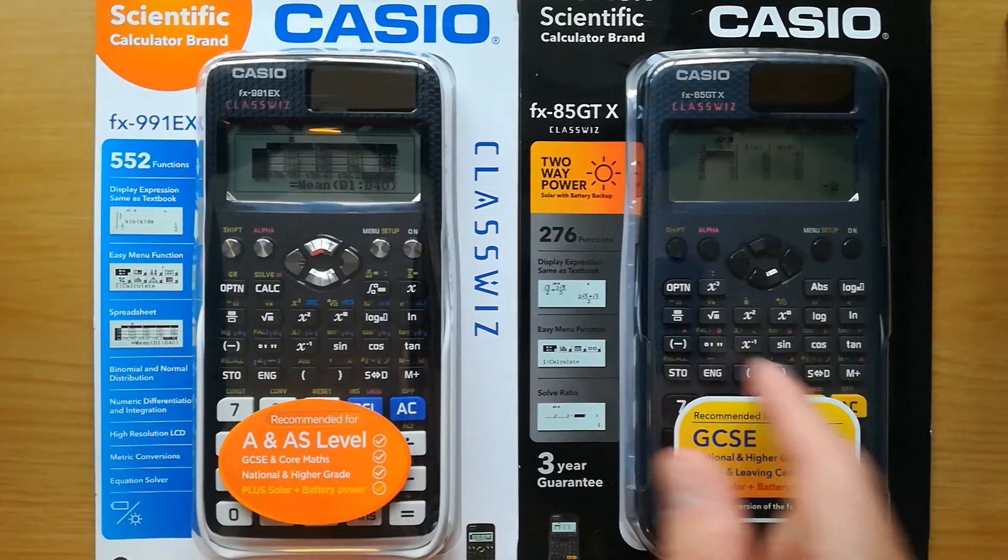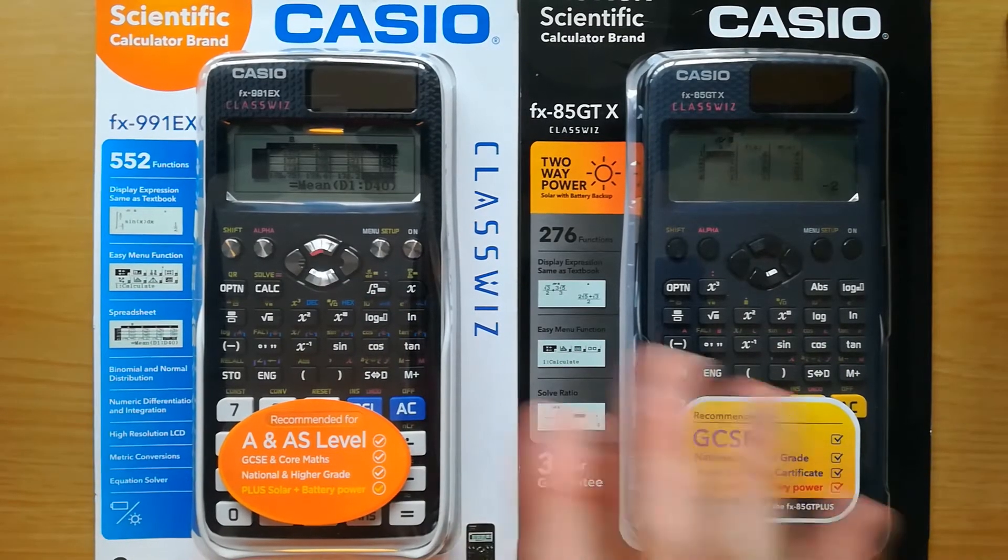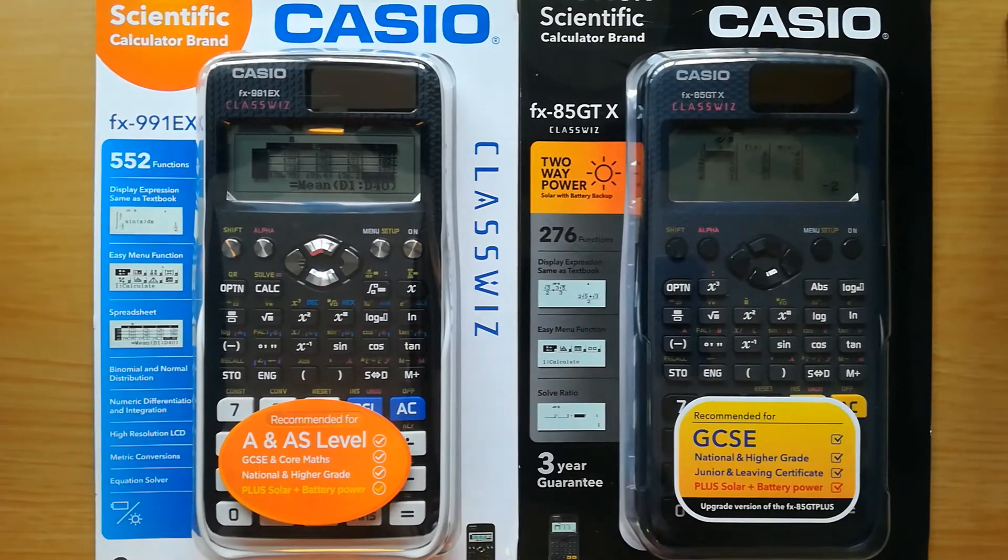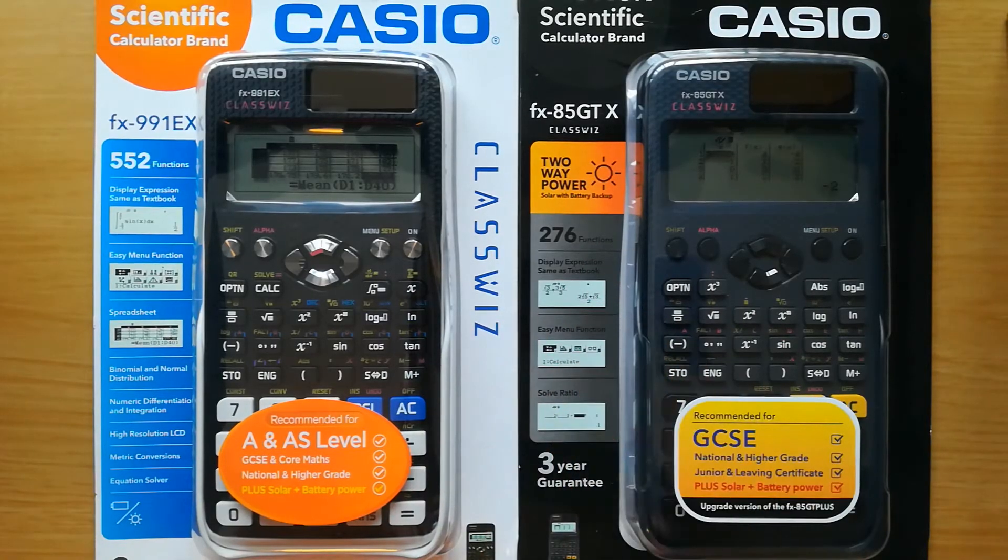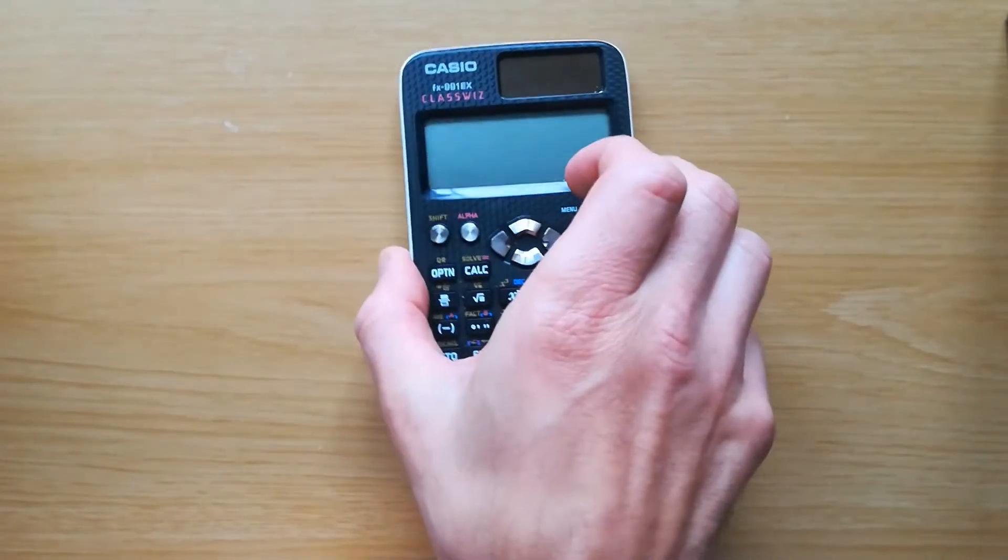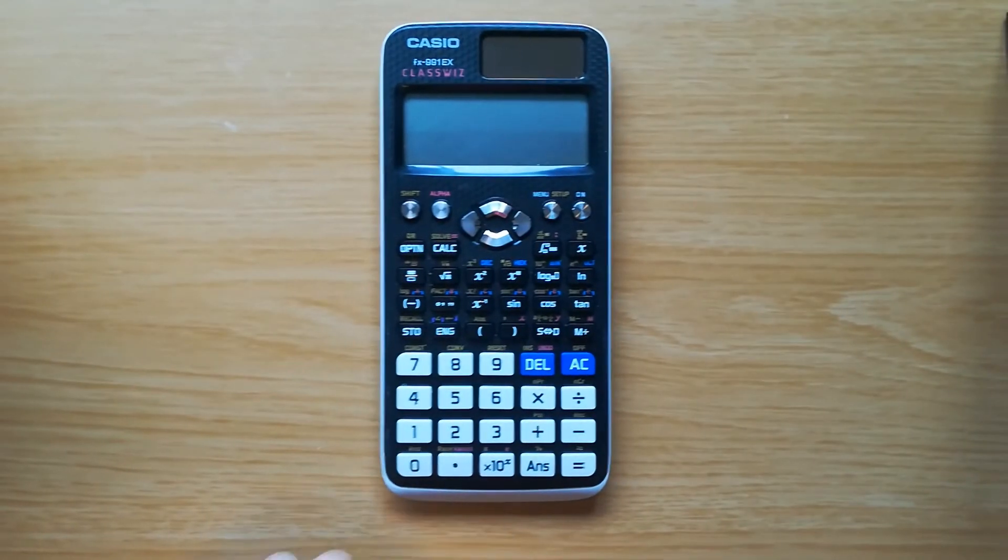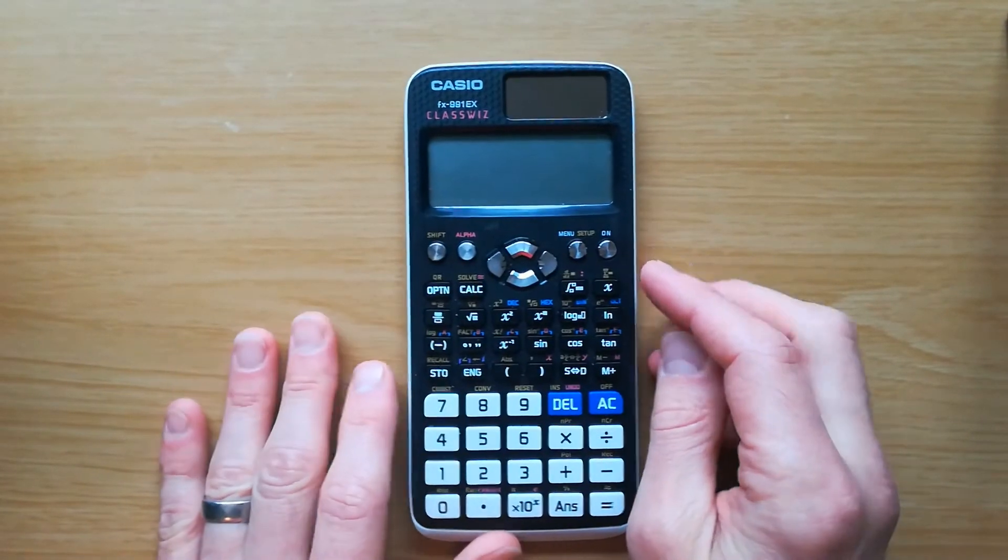The main thing about them is that the features and the buttons are in the same place. So for what I'm going to do today it doesn't matter which of these you've got, but if you've got a Casio scientific calculator this is going to be helpful.